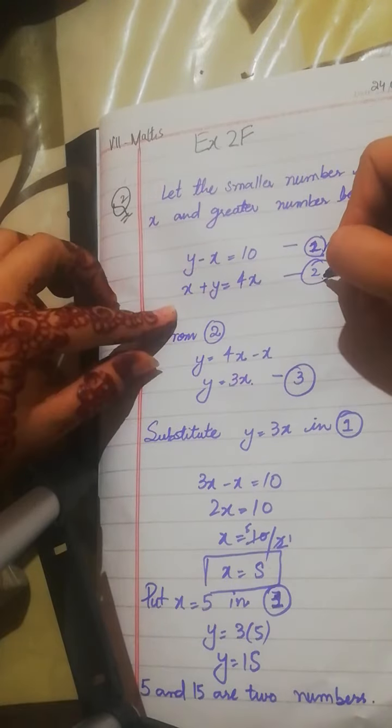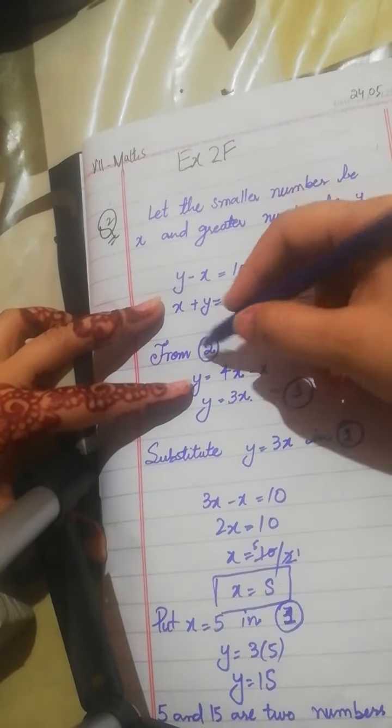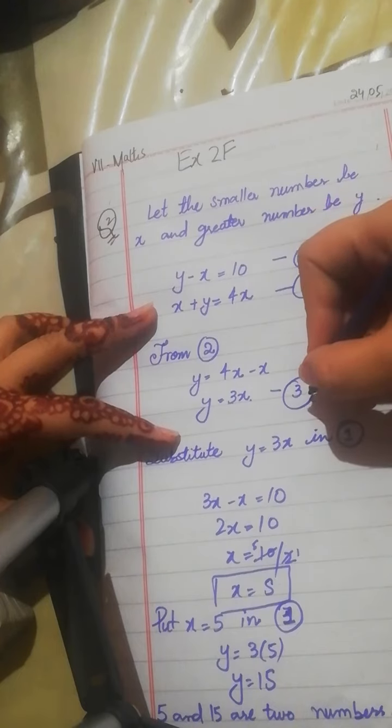From equation number 2, what do we say? Here we have 4x. So y equals 4x minus x, which equals 3x. This is equation number 3.